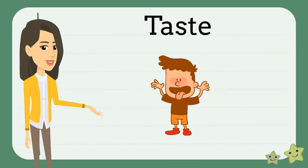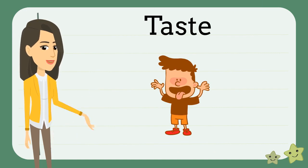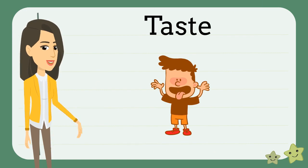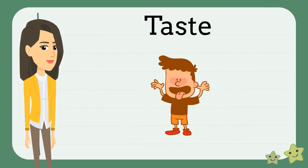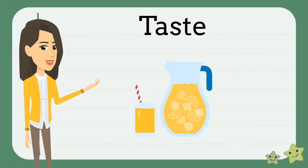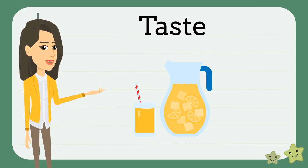The final sense we use for observation is taste. You can use your mouth and tongue to taste. You should only taste if a grown-up says it's okay. For example, you might taste this glass of lemonade and see how sour it is.